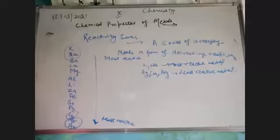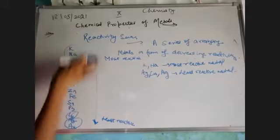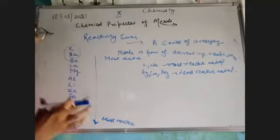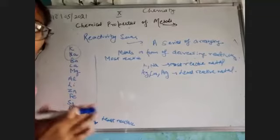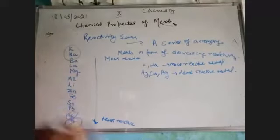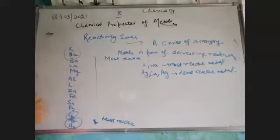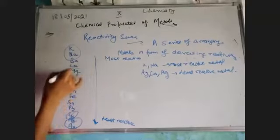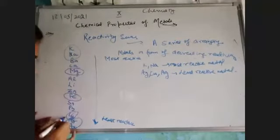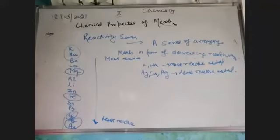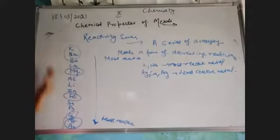You need to keep this reactivity series in mind. The most important metals to remember are sodium, potassium, magnesium, iron, and these. To help remember the series, there is a shortcut mnemonic that covers the symbols in order.